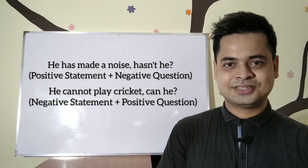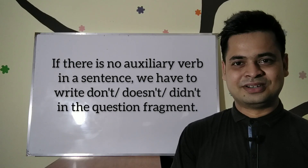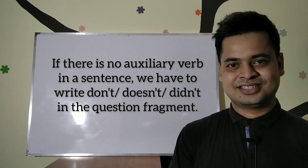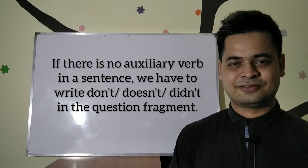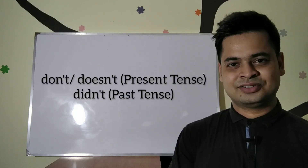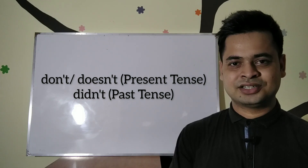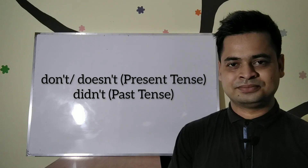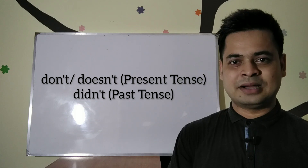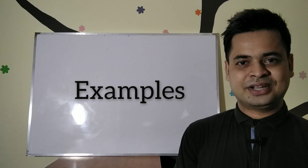If you find that there is no auxiliary verb in a sentence, you have to write 'don't,' 'doesn't,' or 'didn't' in the question fragment. If the statement is in present tense, you have to write 'don't' or 'doesn't' according to the subject. If the statement is in past tense, you have to write 'didn't.'